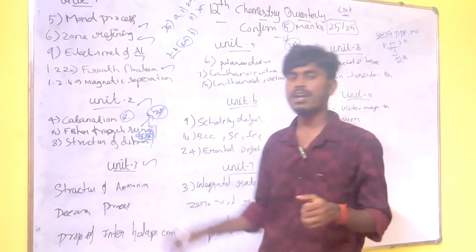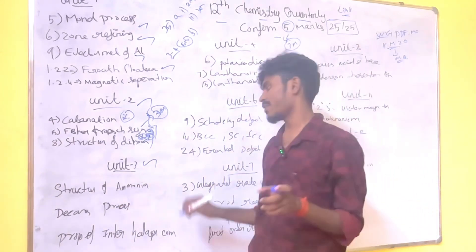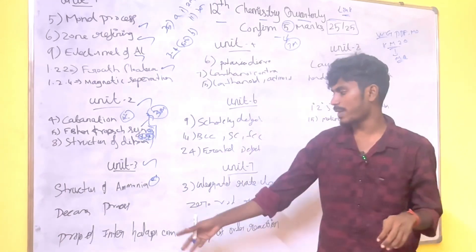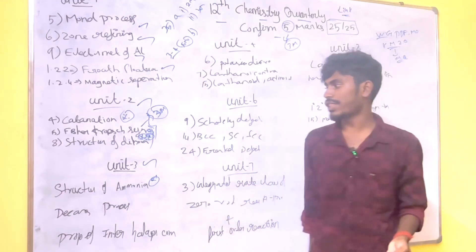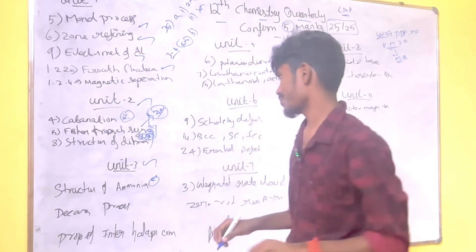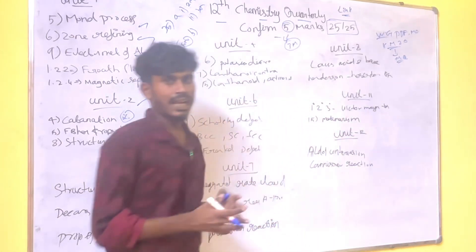In unit 3, there is ammonia structure. Structure of ammonia is very important. Decan's process is properties of interhalogen compounds. These three questions are in unit 3. These are very important. And if you are in unit 3.